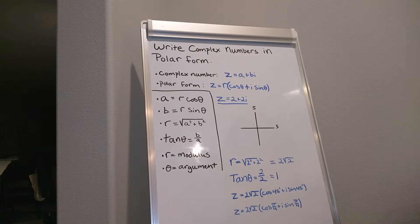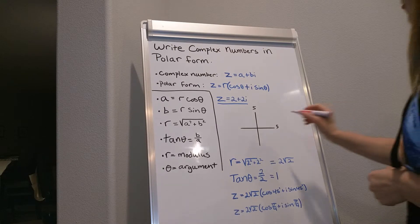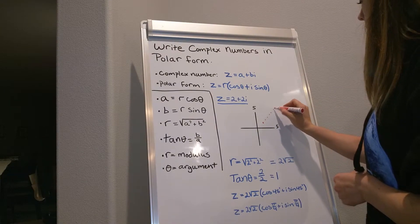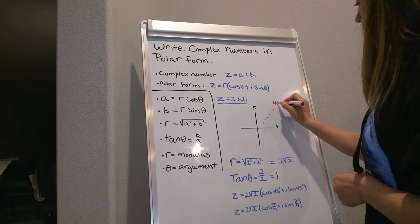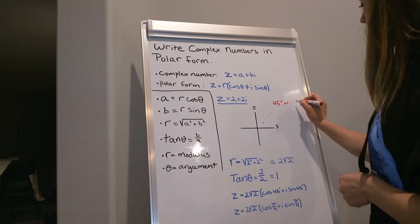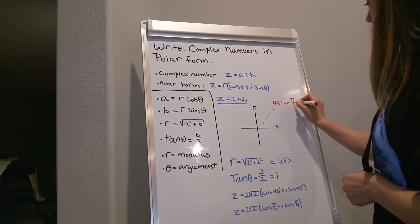So we're given the complex number 2 plus 2i. We're going to go ahead and plot that, which gives us an angle of 45 degrees, or pi over 4.